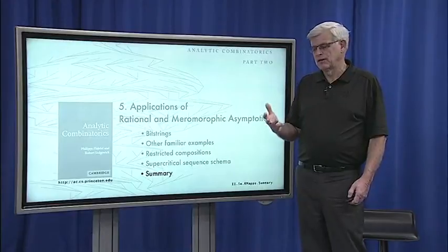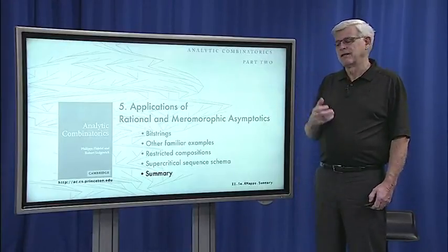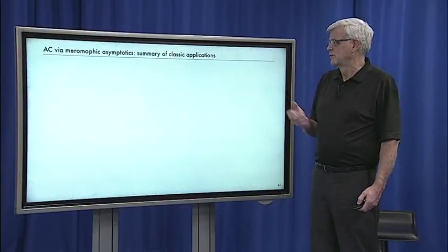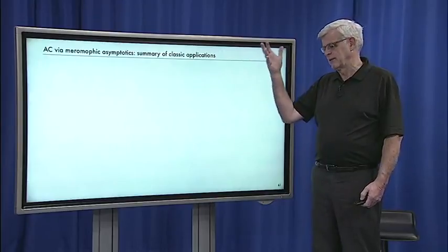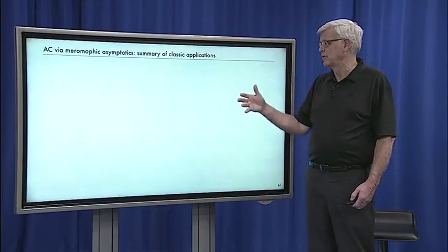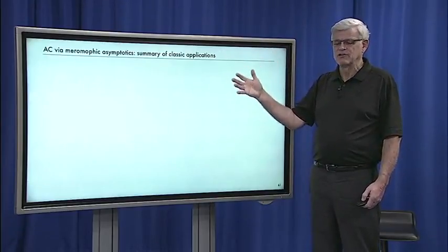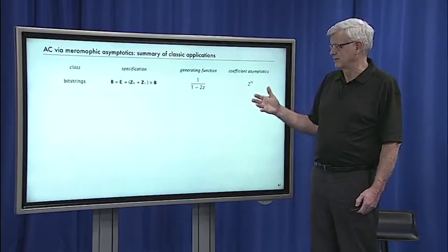All right, so let's summarize what we've done in this lecture. As promised, we've looked at, from an analytic combinatorics point of view, the whole range of classic combinatorial classes.